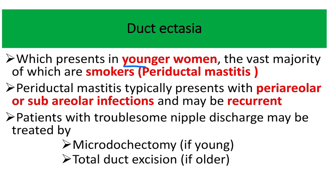Duct ectasia is less common in younger women; the vast majority occurs in smokers, similar to periductal mastitis. Periductal mastitis typically presents with periareolar or subareolar infection, which may be recurrent. The key difference: in periductal mastitis, infection occurs around and outside the nipple areolar complex, whereas in duct ectasia, the pathology is within the nipple areolar complex. Treatment for duct ectasia is microdocectomy in younger patients and total duct excision in older patients.